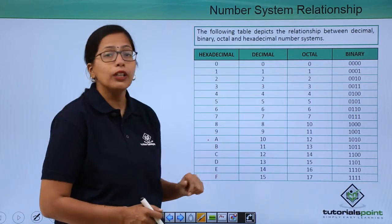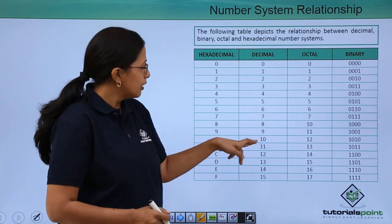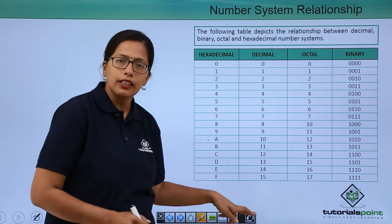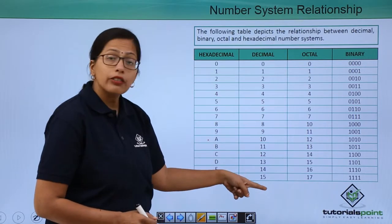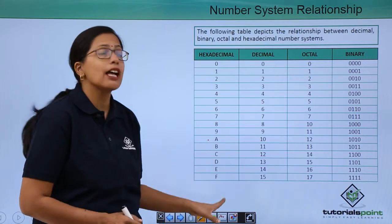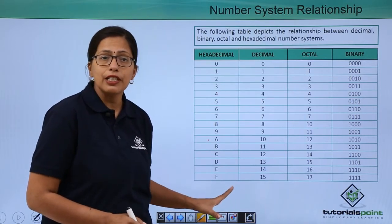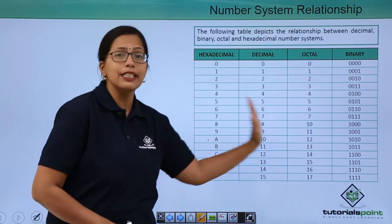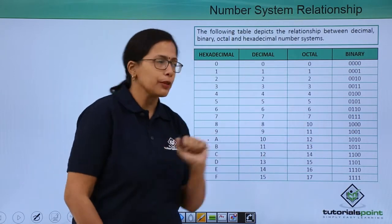Decimal has got only 10 digits, till 10 and then 11, 12, 13 and till 15. Why I am writing it till 15? Because hexadecimal has got the maximum number of digits and I want to see how these digits convert in the other number systems.